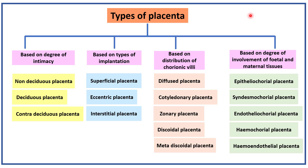We can classify placenta in four different ways. Based on degree of intimacy, placenta is of three types. Based on types of implantation, placenta is of three types. Based on distribution of chorionic villi, placenta is of five types. Based on degree of involvement of fetal and maternal tissues, placenta is of five types. We will talk about them one by one.